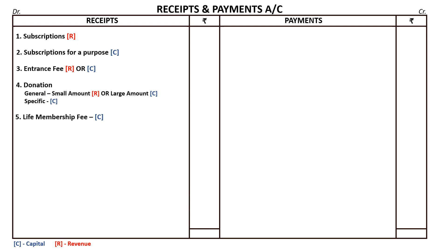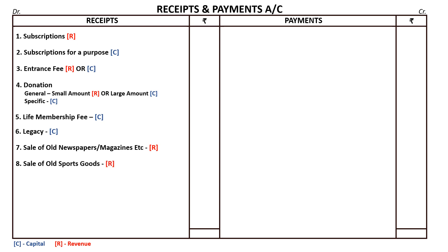Life membership fees is received only once by a not-for-profit organization, so naturally it is capitalized. Legacy — an amount received by a not-for-profit organization as per the will of a deceased person — it is credited to income and expenditure account. Sale of fixed assets, say for example sale of furniture: fixed asset sale is generally a capital receipt.